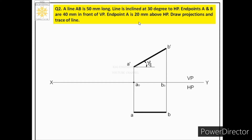Now we will solve further to find the trace of the line. The line is inclined at 30 degrees to HP, so when we extend the line it will intersect HP. We will get HT, that is the horizontal trace. Let us see the procedure to obtain the horizontal trace.